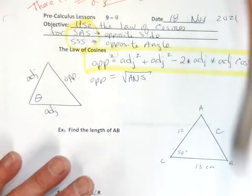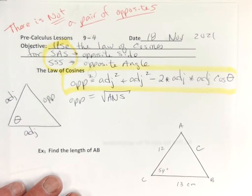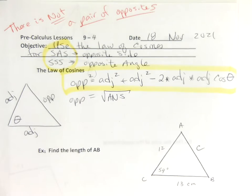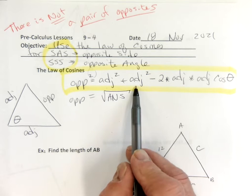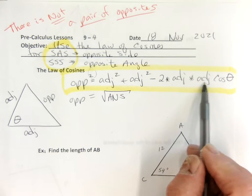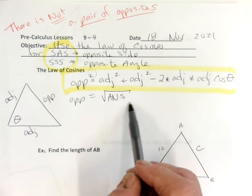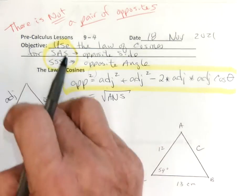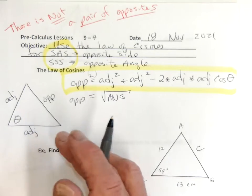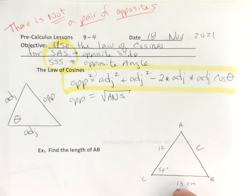All right, here we go. See if you can set it up. Opposite squared equals adjacent squared plus adjacent squared minus 2 times adjacent times adjacent times cosine of the angle. So you have to use both the adjacents? Yes, you have to use both — so it's either adjacent 1 or adjacent 2. Yes, you have to use the 12 and the 13.